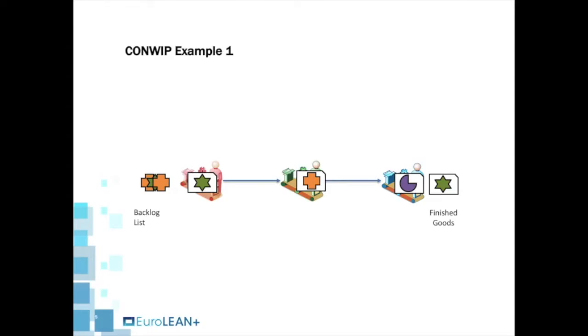Imagine that the Green Star product is consumed. The CONWIP card is detached from the Green Star product and sent to be attached to a product on the backlog list. Once the other products are completed at their current stations, the next product can move into the system. The products will then move through the system and eventually arrive in finished goods. As a new product is consumed, the process starts over again.